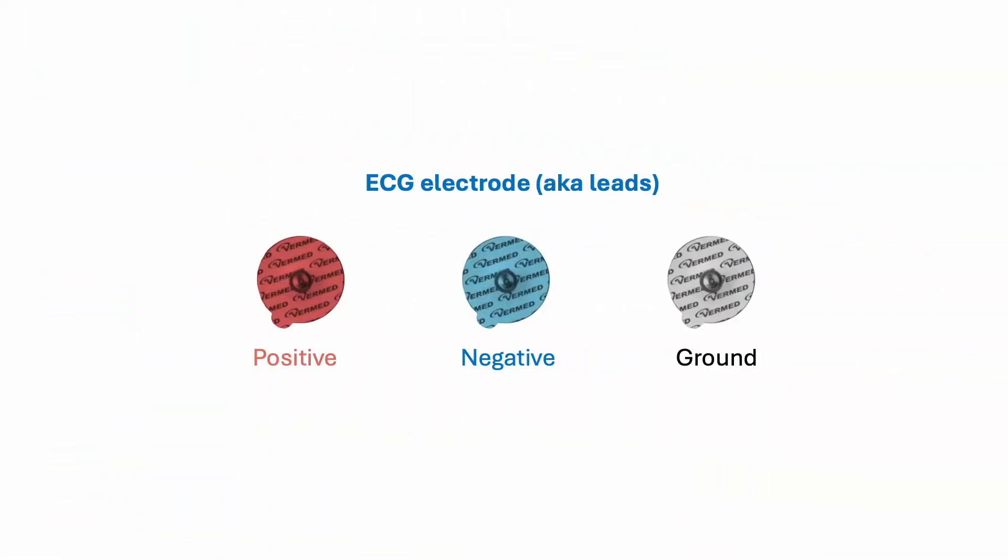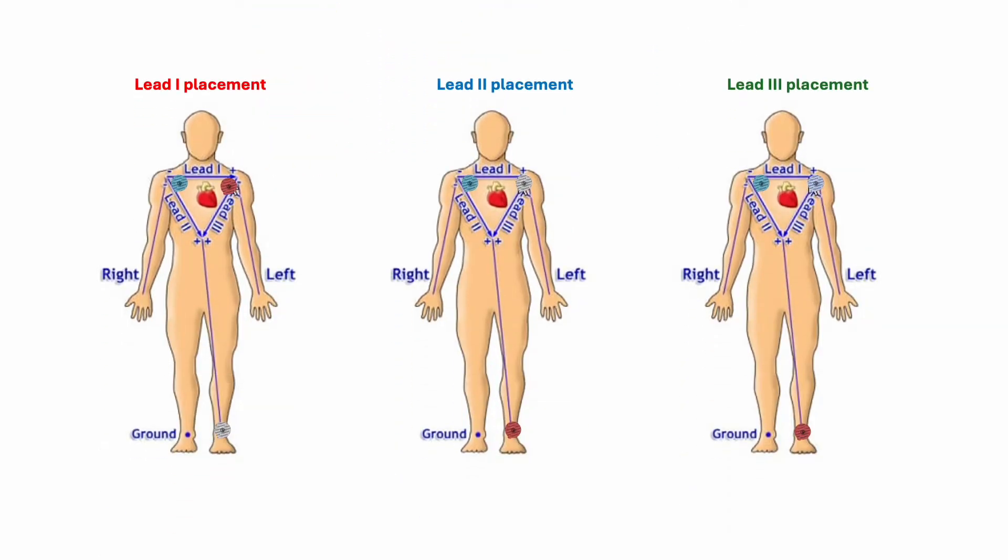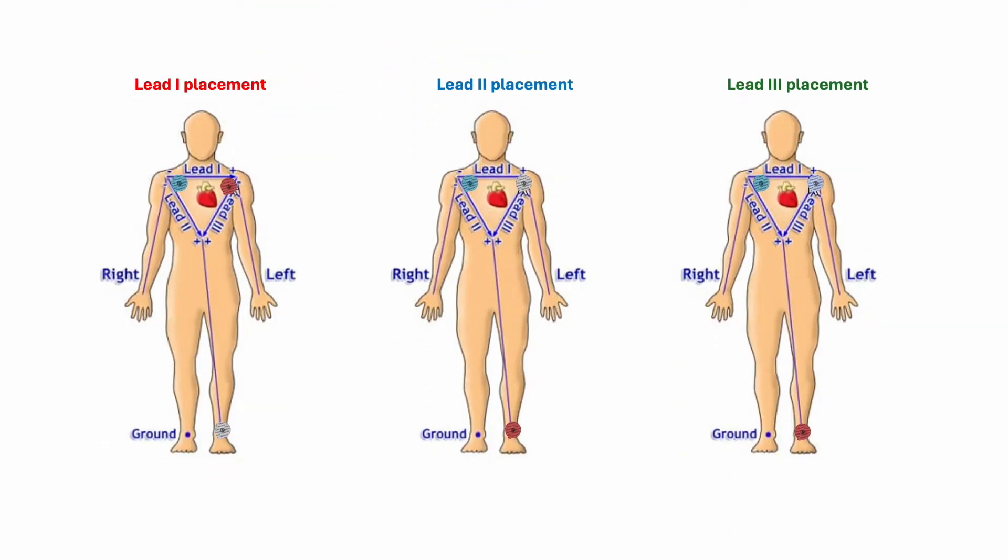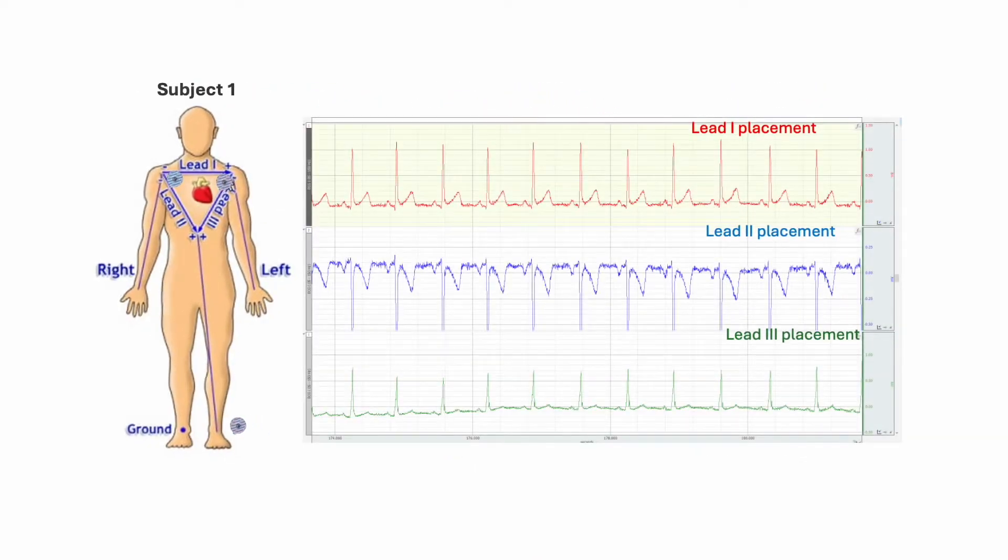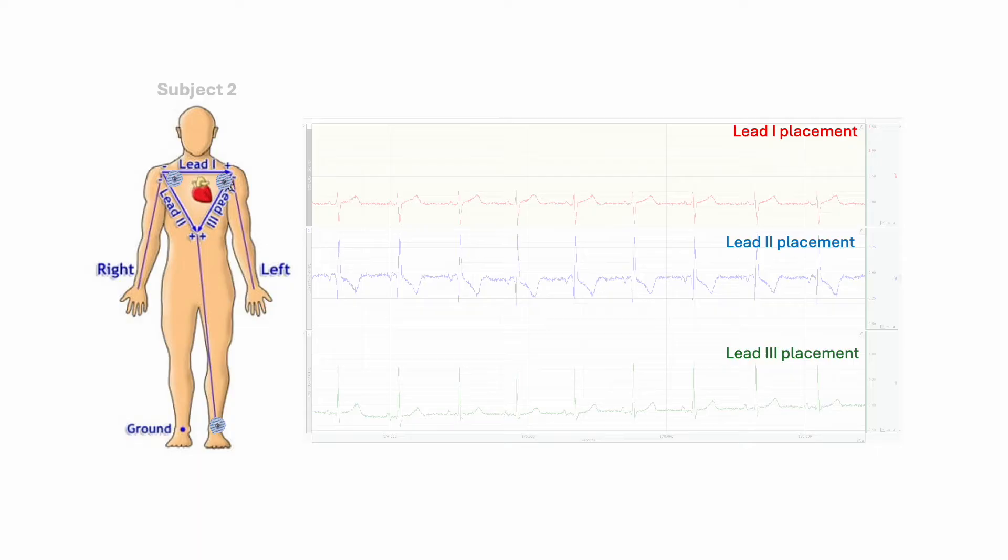An ECG is a recording of the heart's electrical activity, which can be collected using three electrodes or leads, which are stuck to the skin using small patches. ECG leads can be placed in a variety of ways to reveal a different perspective of the heart's electrical activity. Different people can have different shapes for different lead placements.